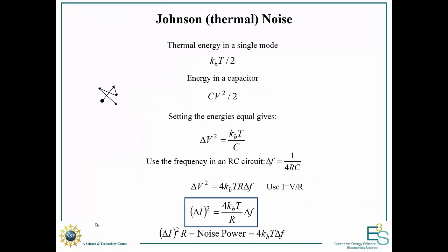The second type of noise is thermal noise. If you have a single mode, you have a noise of kT over 2. If you consider a capacitor with some energy, the energy stored will be CV squared over 2. If we set these equal, we get a noise voltage of kT over C. That tells us how much voltage we're going to get just from random thermal fluctuations in the capacitor.